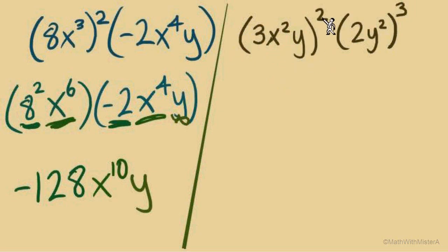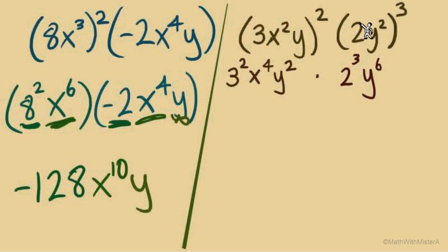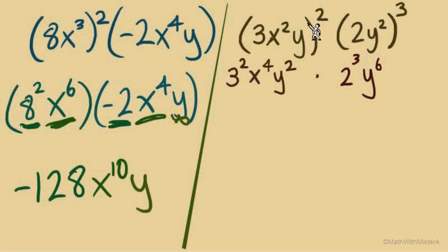First move on the first set of parentheses: an exponent of 2 is worked into each base, giving us 3 to the power of 2, x to the power of 4, and y to the power of 2. Moving to the second set: that gives us 2 to the third power and y to the sixth power. Remember, if there's no existing exponent, the outside exponent just goes there. If there already is an exponent, we multiply: 3 times 2 equals 6. If it helps, you can think of every base as having an exponent of 1 at the start and multiply into all of them — whatever method keeps you accurate, do it.